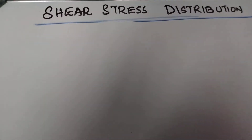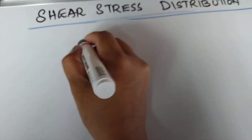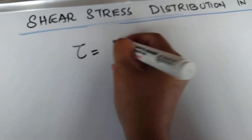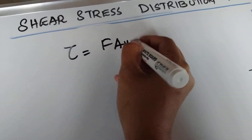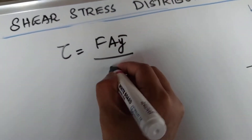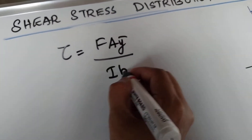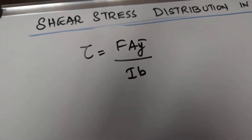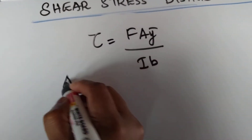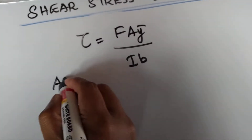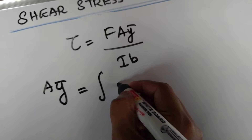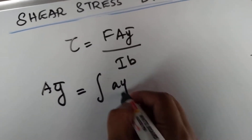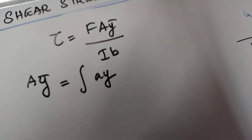The shear stress is given by τ = F·A·ȳ / (I·b). So what is A·ȳ? A·ȳ is equal to the integral of A·y.